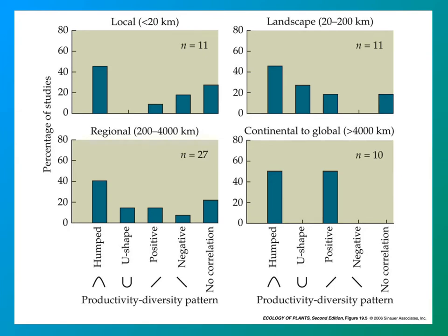Looking at a meta-analysis of studies examining how productivity affects species diversity at local, landscape, regional, and global scales, the majority of studies at all these levels show a humped diversity curve — diversity increases with increasing productivity up to a point, then declines. But there are other distributions too: U-shaped (high, then low, then high), positive increasing, negative, and some with no correlation at all.